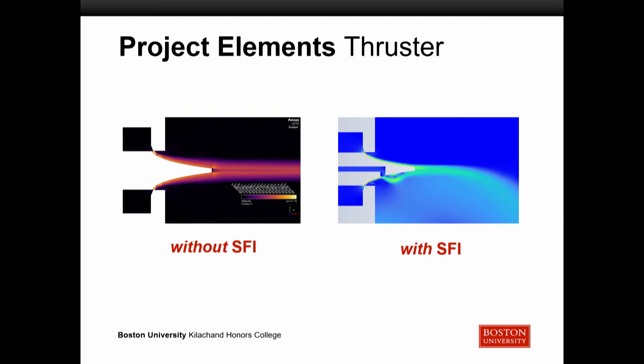Moving back to the SFI — from the computer simulations, without SFI you can see the exhaust continues down the spike and straight out without any movement or turning. With the SFI case on the right, we're introducing the secondary flow, which causes a disturbance in the main flow, and that has downstream effects in the form of vectoring the thrust. That's something we can control by varying the input on the secondary flow.